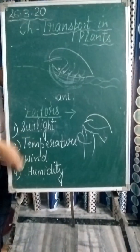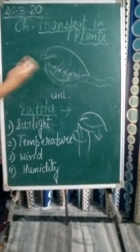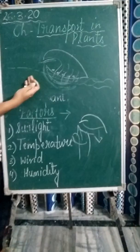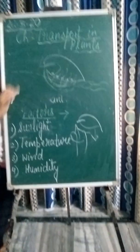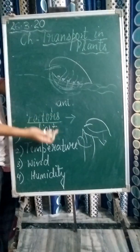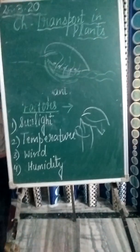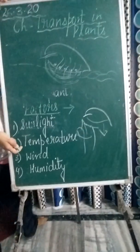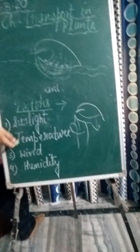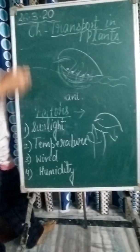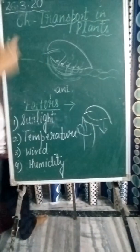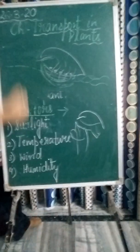The last factor is humidity. Humidity means the amount of water vapors in the air. When the air is already humid and already has lots of moisture, it directs the plants not to do transpiration because the air cannot hold any more moisture. So when the air is humid, the rate of transpiration decreases. On a foggy day, the air already has lots of moisture, so the rate of transpiration decreases.